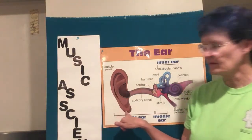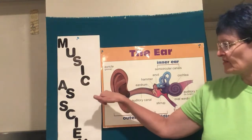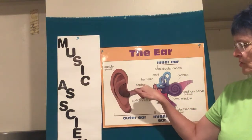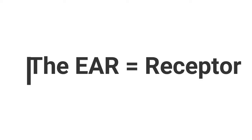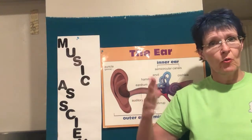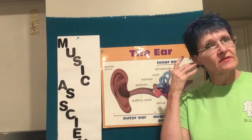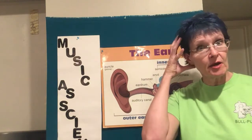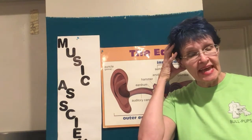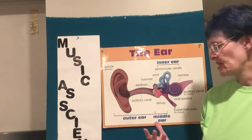The tuning fork vibrates and travels everywhere. Our receptors of hearing — we all know this — it's called our ear. Sound waves travel in through the auditory canal, and they hit and vibrate a membrane called the eardrum. The eardrum wiggles; it vibrates when those sound vibrations hit it. And then our brain translates that sound, and we know what we're hearing. We're amazing objects.